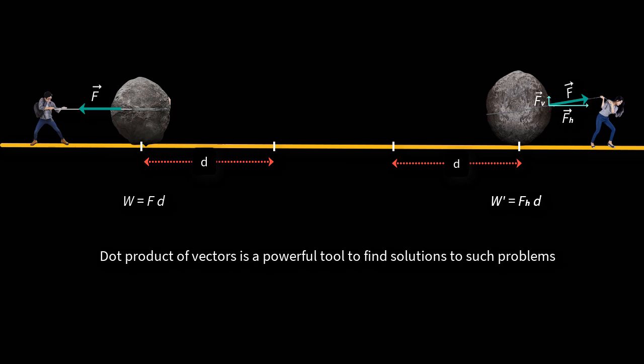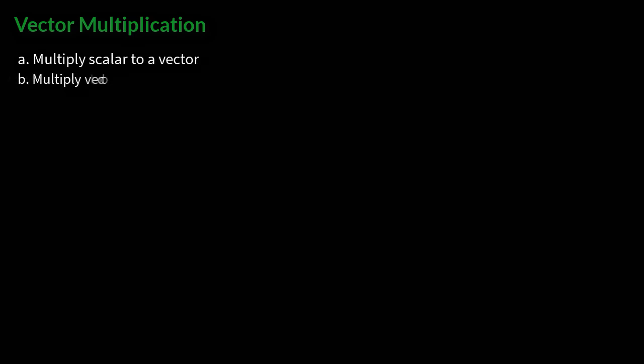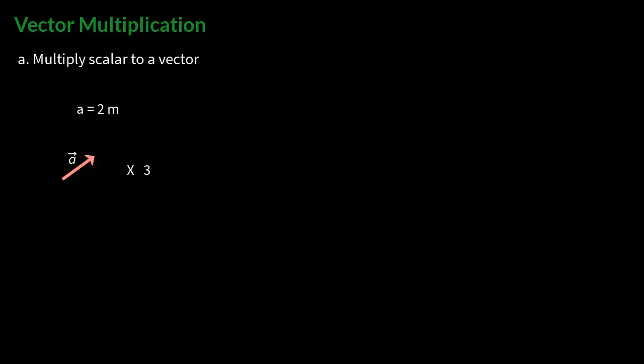In multiplication between two vectors, you can either multiply a scalar to a vector, or multiply a vector by a vector. Let us take the first case — multiplying a vector with a scalar. For example, here is a displacement vector of two meters. If we multiply it with a scalar of value three, you get a new vector that is three times the length of the original vector, or six meters, and in the same direction.